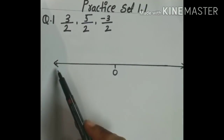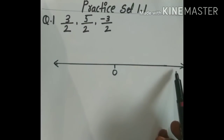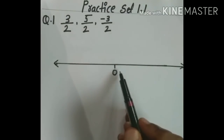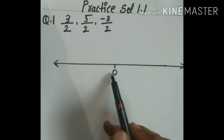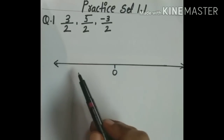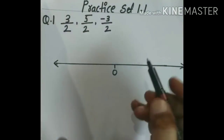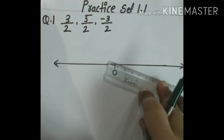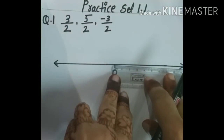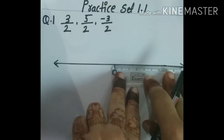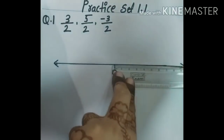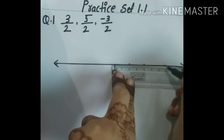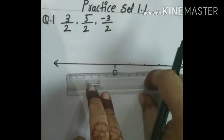First of all children, draw the line without any measure. At the center, take 0. Right of 0 is all positive numbers and left of 0 is all negative numbers. Take some units on the number line using your scale. I am taking 1 unit equal to 2 cm — measurement is not required, but if you take it, you get an accurate number line. Mark 1, 2, and 3 units on both the right and left hand sides.